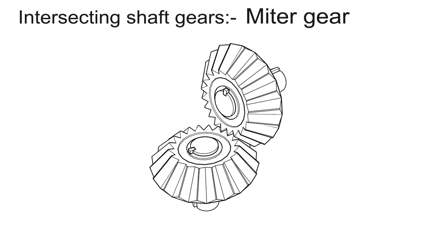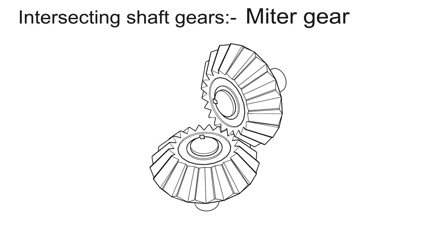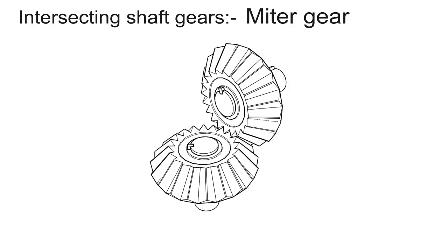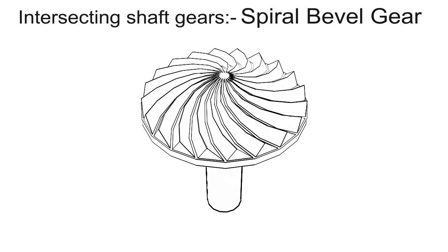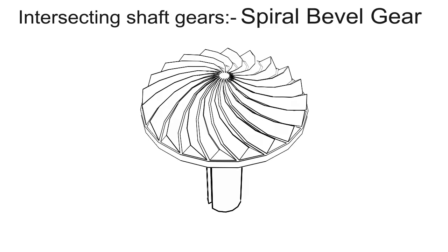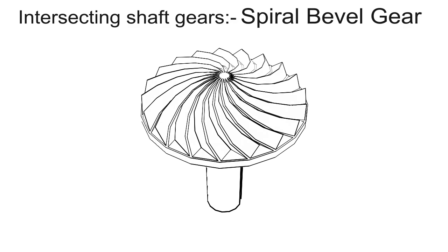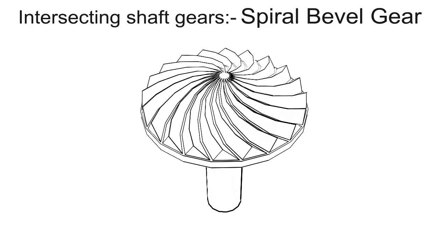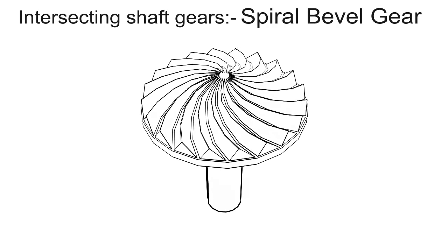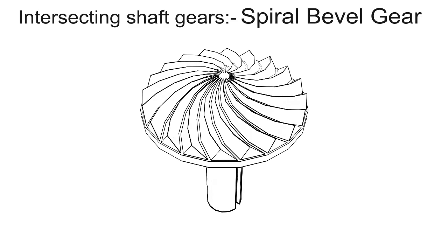Gears of the same size connecting two shafts at right angles to each other are known as miter gears. Spiral bevel gear — when the teeth of bevel gears are inclined at an angle to the face of the bevel, they are known as spiral bevel gears or helical bevels. They are smoother in action and quieter than straight tooth bevels, as there are gradual load applications and low impact stresses. They are used in differentials of an automobile.